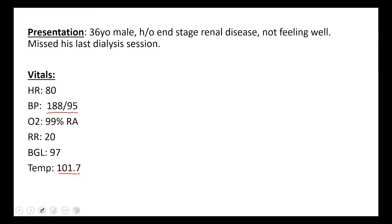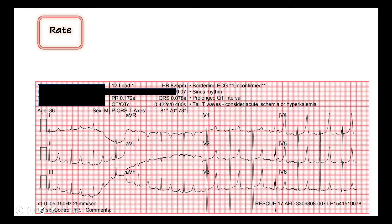Since he is an end-stage renal disease patient, think about all the things you need to consider with that. We get our 12-lead. Remember that a lot of times our renal failure patients won't have typical ACS symptoms, so it's always important to get a 12-lead on them, and one of the particular things you're looking for is hyper-K.